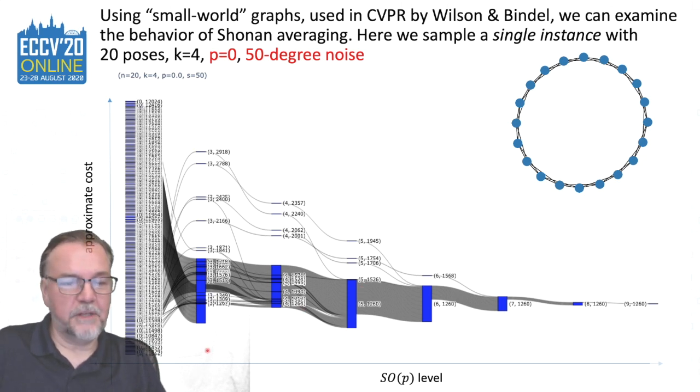Here is a visualization of the algorithm. This is inspired by Wilson and Bindel's CVPR paper just this year. On the x-axis we show the P level and on the y-axis we show the approximate cost. What is shown is the fate of 200 initial estimates and where they terminate, i.e. converge to the global optimum. This graph has 20 poses and every node is connected to four other nodes in the graph.